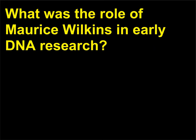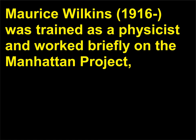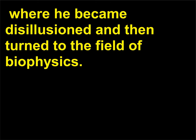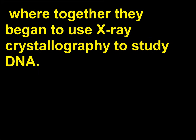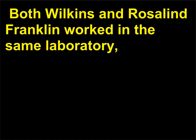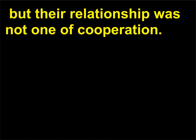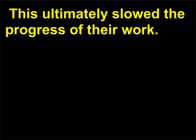What was the role of Maurice Wilkins in early DNA research? Maurice Wilkins (1916) was trained as a physicist and worked briefly on the Manhattan Project, where he became disillusioned and then turned to the field of biophysics. He worked at King's College, London, with John Randall, where together they began to use X-ray crystallography to study DNA. Both Wilkins and Rosalind Franklin worked in the same laboratory, but their relationship was not one of cooperation, which ultimately slowed the progress of their work.